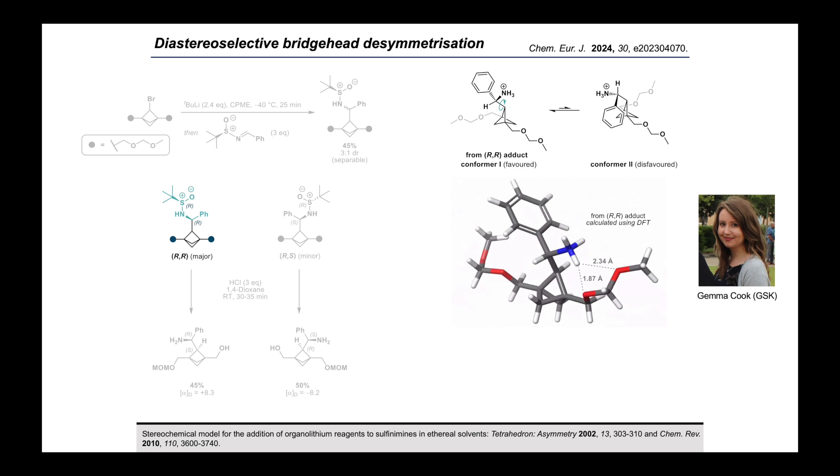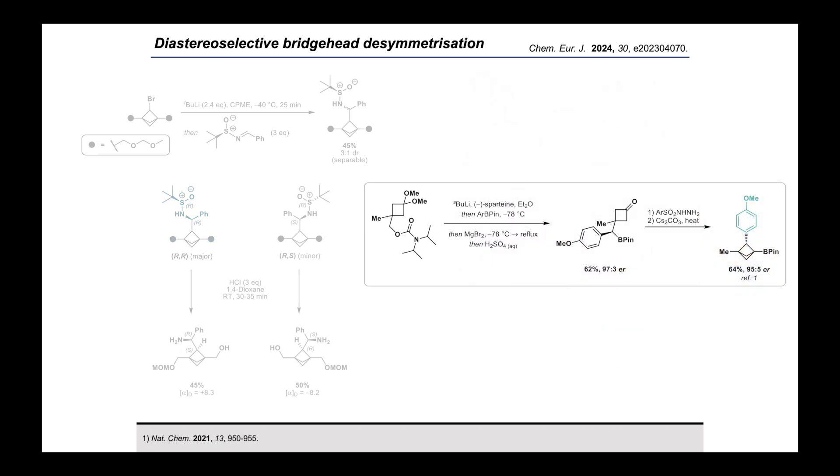Thus the protonated amine selectively activates this front MOM group, as drawn, towards hydrolysis over the rear one, and vice versa for the corresponding enantiomeric amine derived from the minor Ellman diastereomer. This activation could be through a directed protonation, as shown in the left box, or by formation of a transient hemiaminal ether, as drawn in the right-hand box. In any case, the diastereocontrol essentially arises through a stereochemical relay from the chiral information in the Ellman auxiliary. We expect that this method might stimulate interest in the development of other auxiliary-based asymmetric BCP desymmetrization methods.